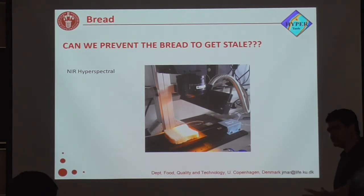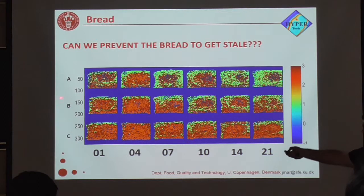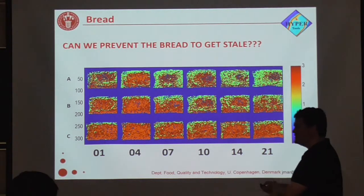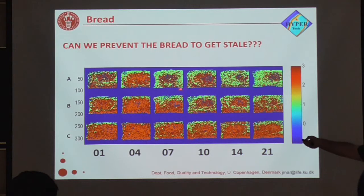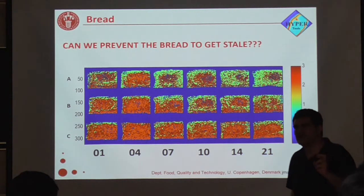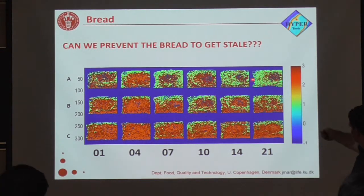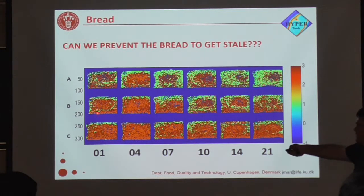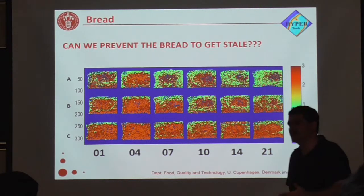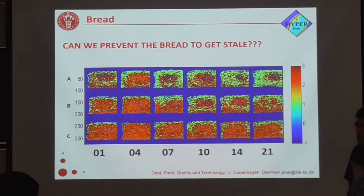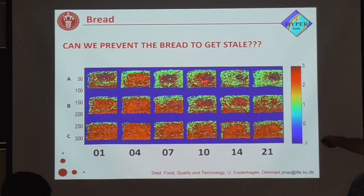We scanned and obtained the hyperspectral images. Look at this — normal bread. Can you see the green clusters? The green clusters represent hardness: how many pixels are getting hard with time. Look at the normal bread — at twenty-one days, it is completely hard. Now look at the breads with enzyme one and enzyme two. Can you see the difference? It's pretty clear. The advantage is that we know how the bread gets hard — and you can see it's not a homogeneous process; it's kind of moving like that.